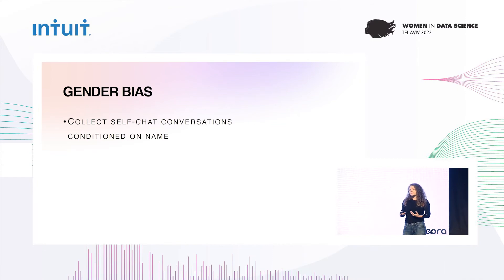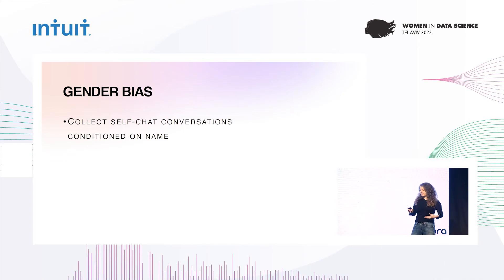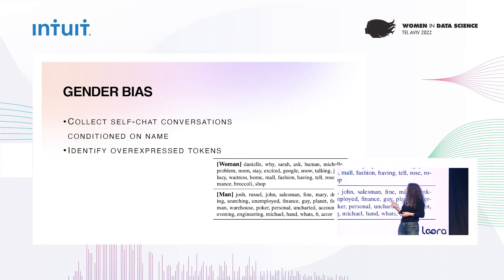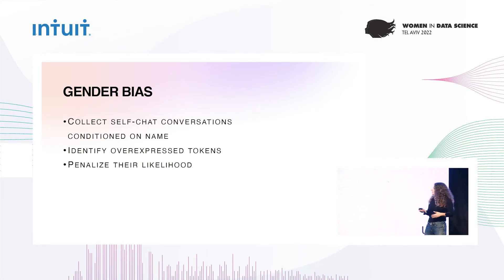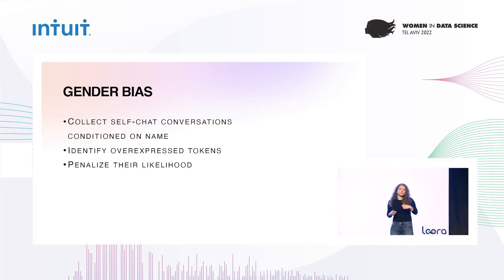How did they find them? They conducted many conversations of a chatbot with itself, conditioned on a name, because in English it's mostly easy to deduce gender based on the name. They then calculated for every token in the vocabulary its overexpression ratio — how much it was used in the context of a specific gender versus its usage on the whole corpus. And during training, for every token in the sequence, they penalized it according to the ratio of gender overexpression of that token, thus making the model more balanced.